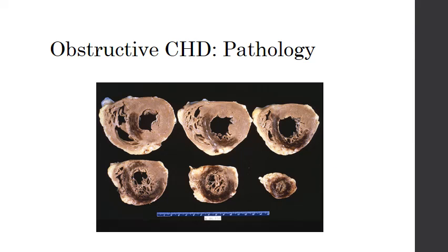Here we can see evidence of a septal myocardial infarction. It's fairly easy to see — it's the dark, dusky necrosis in this region. This is a transmural infarction, as the necrosis has penetrated the entire septum. The left ventricle is the much thicker wall on one side, and the right ventricle is on the other.